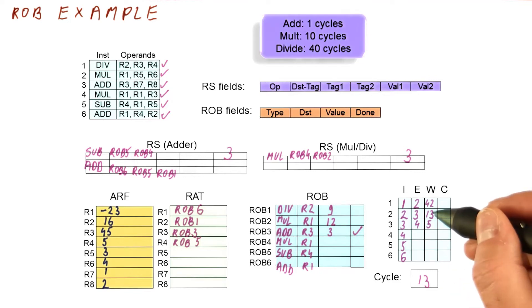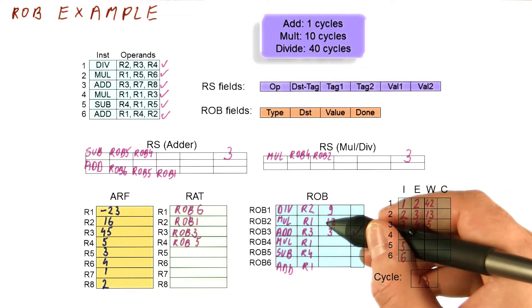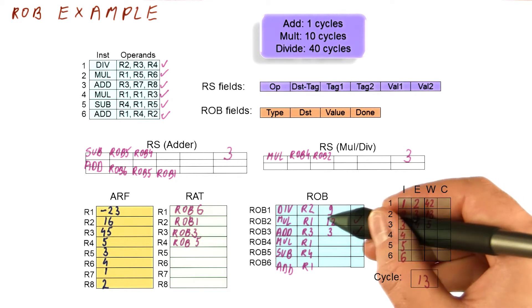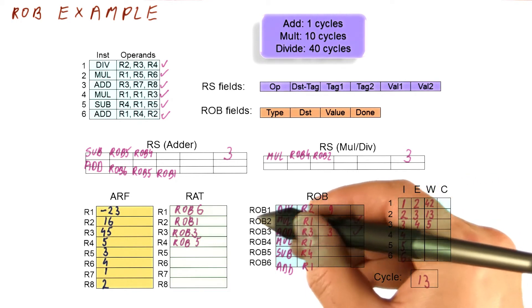So in cycle 13, what happens is this rob2 instruction finally writes its result. This result is 12. We mark now this instruction as done.